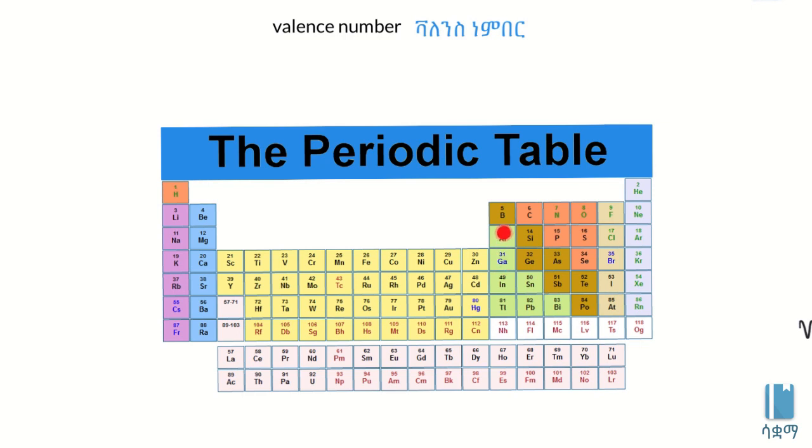The valence number is the number of electrons donated or accepted. The noble gases are stable with eight electrons in their outermost shell. When you achieve the octet, the valence number becomes zero.